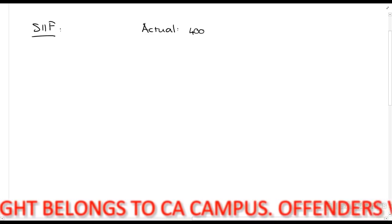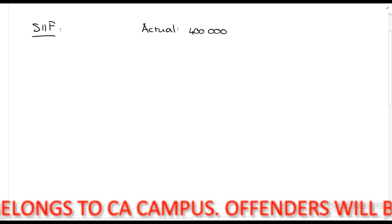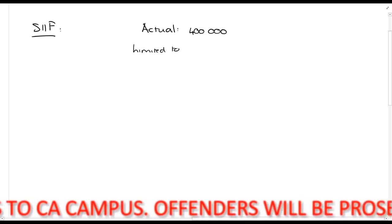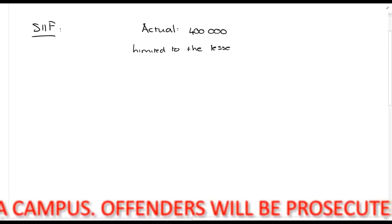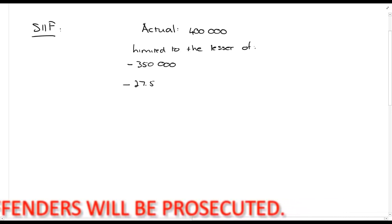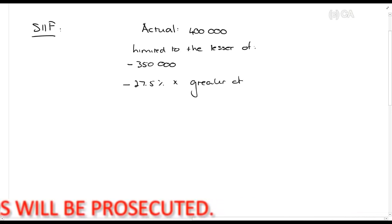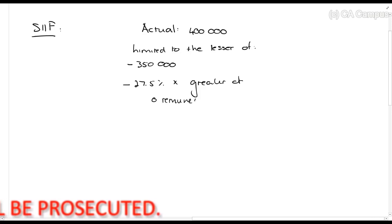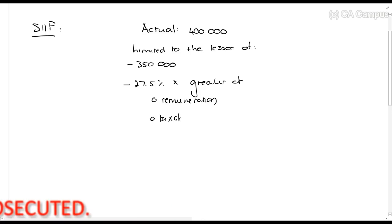The actual amount of the contribution, let's say, was 400,000 rand. So you contributed 400,000 rands to a retirement fund. Remember this is limited to the lesser of the following: 350,000 or 27.5% times the greater of remuneration or the taxable income including CGT.